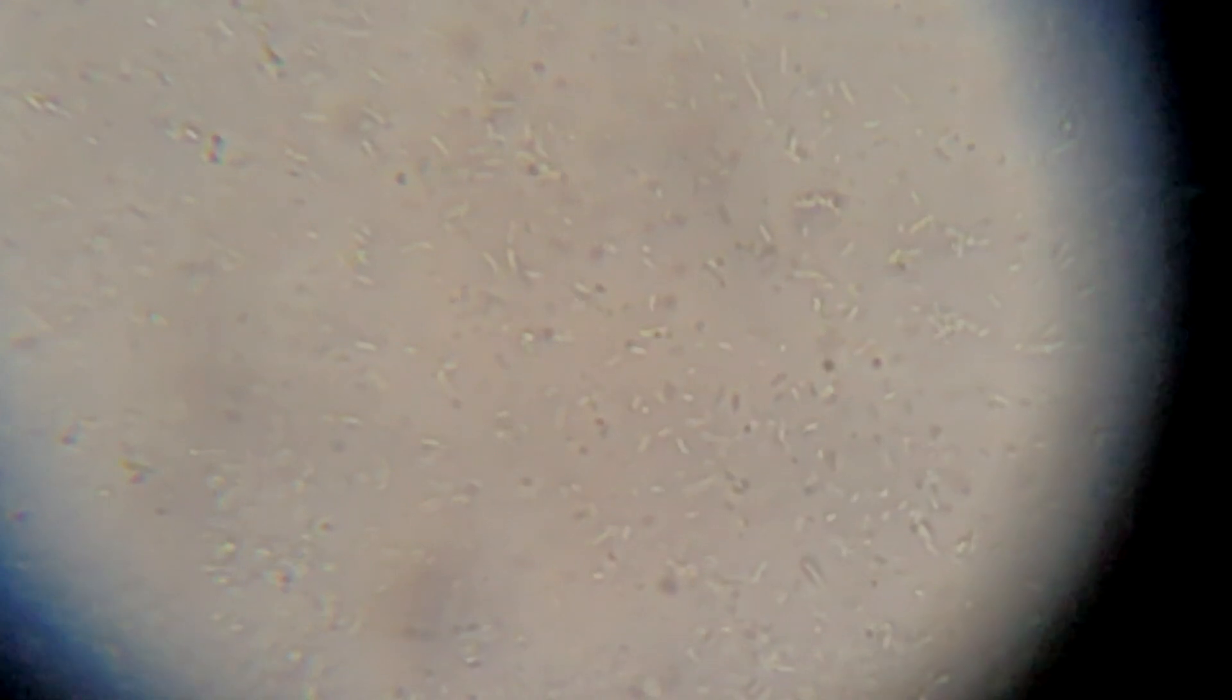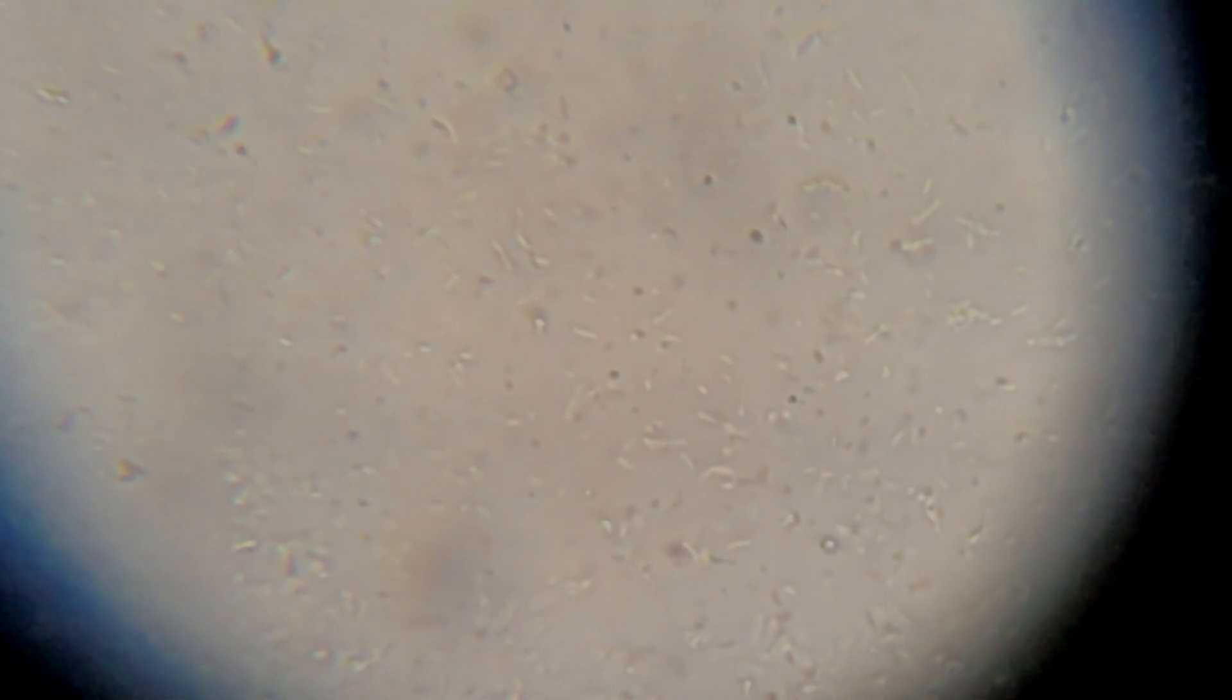You can observe this bacteria, Escherichia coli, is normally present in the gut of people and animals. Most of them are harmless and play an essential role in keeping the digestive system healthy, also helping to digest food and produce vitamin K.